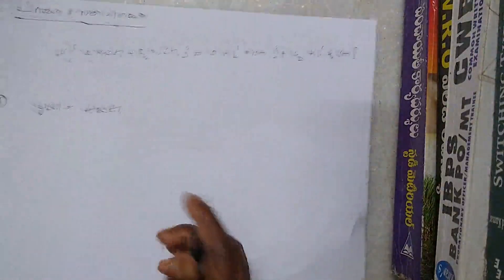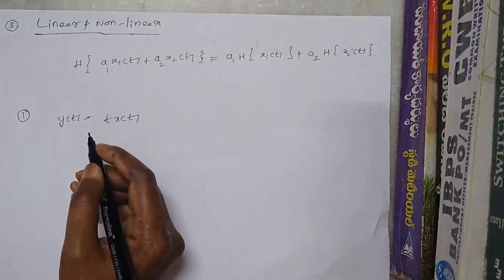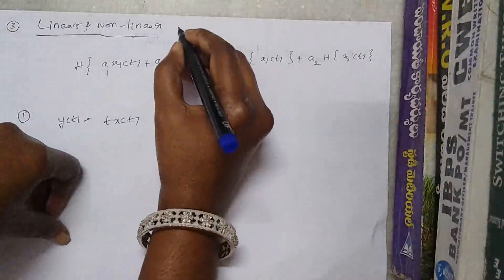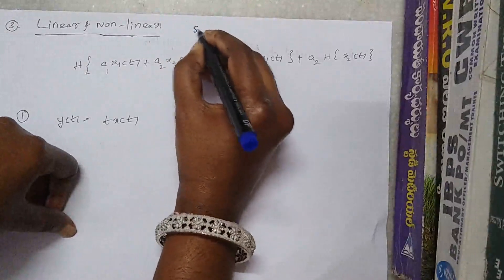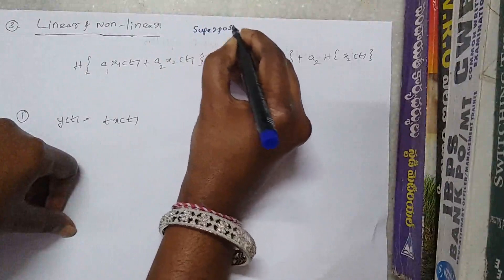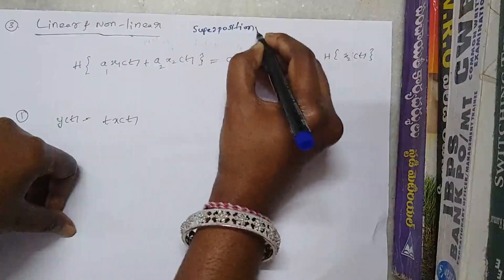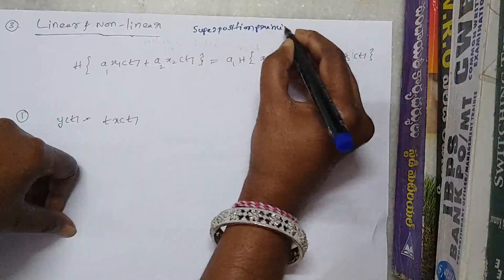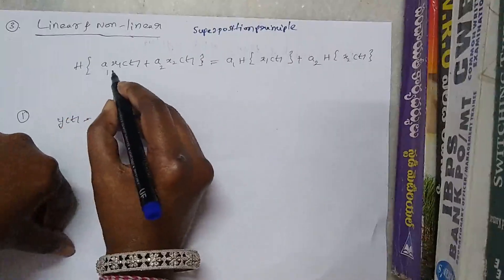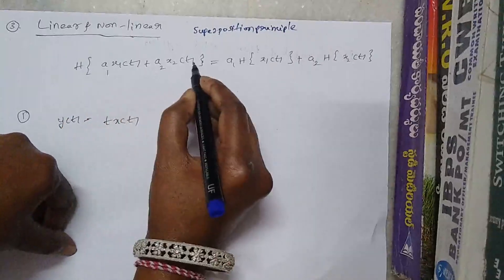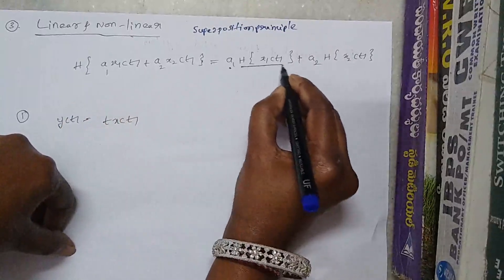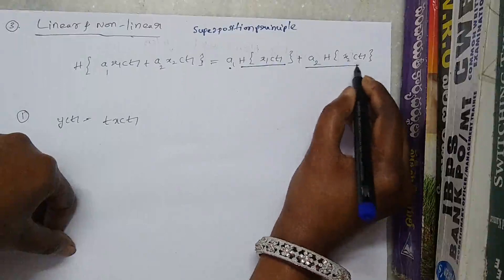The third classification is linear and non-linear. For a system to be linear, it must follow the superposition principle: H{a1·x1(t) + a2·x2(t)} must equal a1·H{x1(t)} + a2·H{x2(t)}.